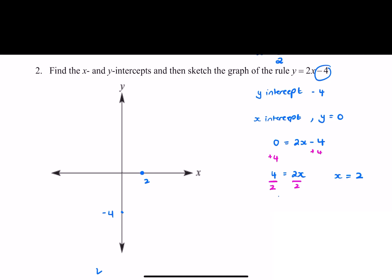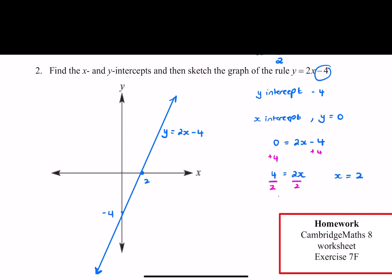I only need two points to draw a straight line. I'm going to draw my straight line, I put arrows on the end, and I always label it. This is the line y = 2x - 4. And that's all there is to the work on the x-intercept. I'll see you later.